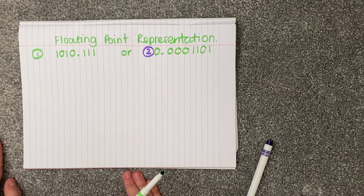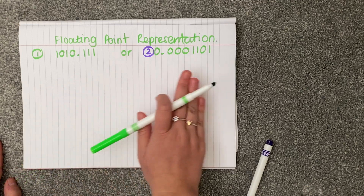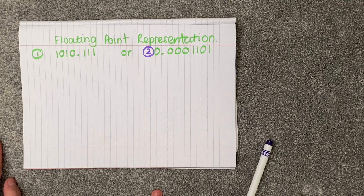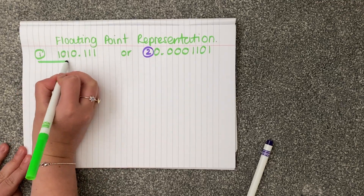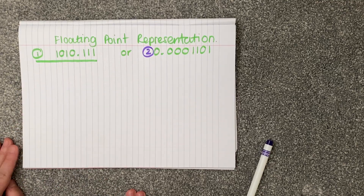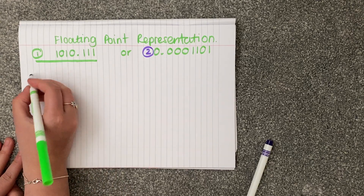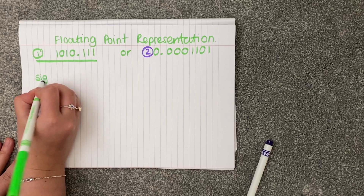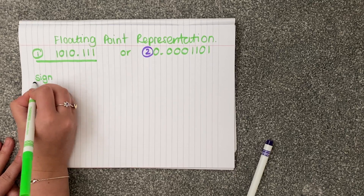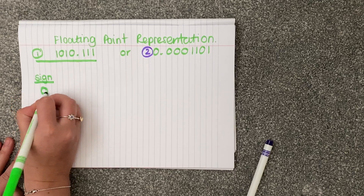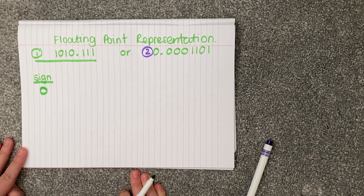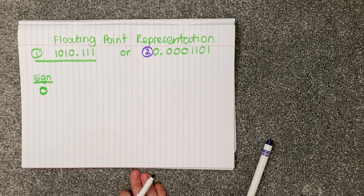So first of all, we need to figure out: is this number positive or is this number negative? The first thing we look at here in number one — this number is positive. It would have a minus before it if it wasn't. So this means our sign is going to be zero, because we know that's a positive number. So we don't start off with our number one at the beginning.